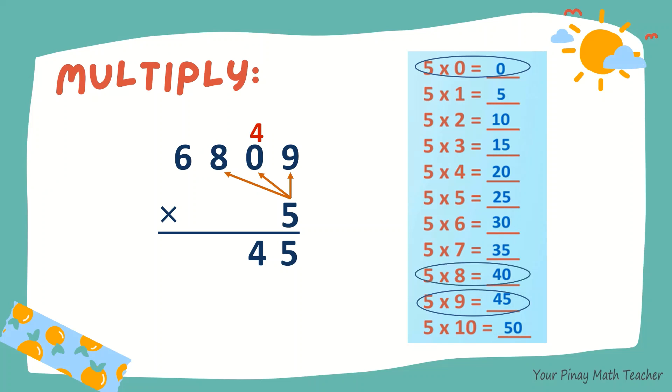5 times 8, 40. 0, carry 4. 5 times 6 is 30. Plus 4 is 34. So the product is 34,045.